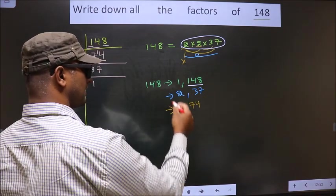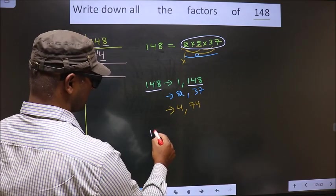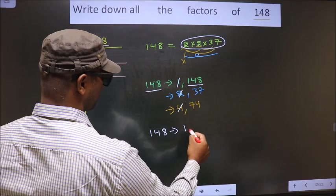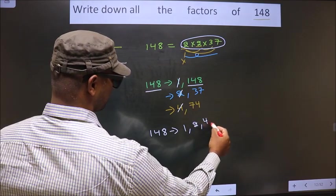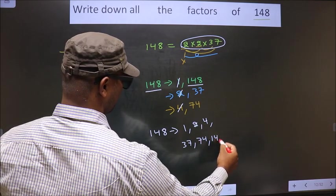So thus, these are all the factors of 148. That is 1, 2, 4, 37, 74, 148.